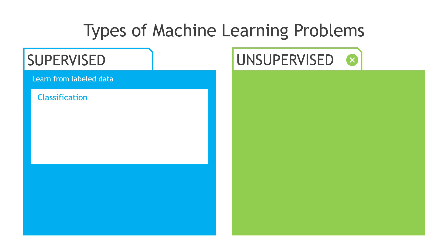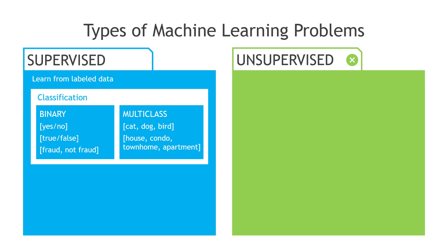Within supervised learning, these would be classification types of problems, where they can be binary — yes, no, true, false — or multi-class, like the last example: cat, dog, bird, or house, condo, townhome, apartment — those kinds of things. But they're defined choices or categories that we're working with.